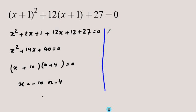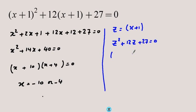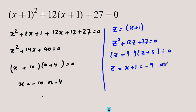A better approach: notice the identical bases are (x + 1) raised to the power 2 and (x + 1) raised to the power 1, plus a constant term. Let z equal x plus 1. The equation becomes z squared plus 12z plus 27 equals 0. Factorizing gives (z + 9)(z + 3) equals 0, so z, which is x plus 1, equals negative 9 or negative 3. Subtracting 1 gives x equals negative 10 or negative 4, with less algebra involved.